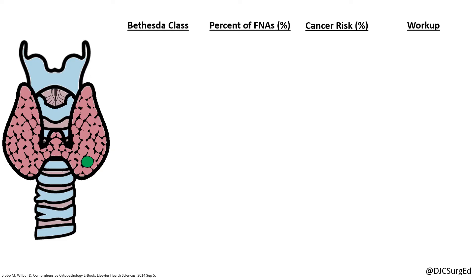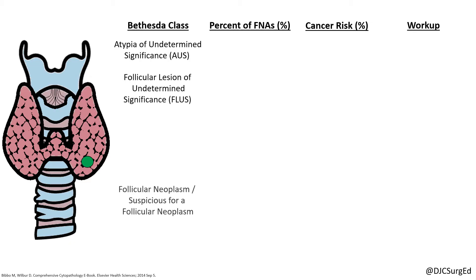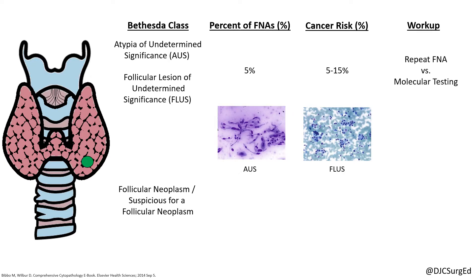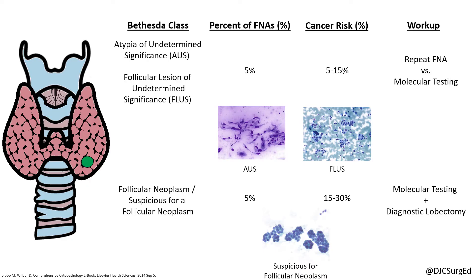When cytology shows a follicular lesion or atypia of undetermined significance, or suspicion for a follicular neoplasm, the results are called indeterminate. The former should undergo repeat FNA, and if molecular testing is unavailable and repeat aspirates continue to show atypia, a diagnostic lobectomy should be performed. Cytology suspicious for a follicular neoplasm has a 15–30% malignancy rate and can undergo molecular testing or diagnostic lobectomy, as FNA will not demonstrate the characteristic vascular or capsular invasion of a follicular carcinoma.